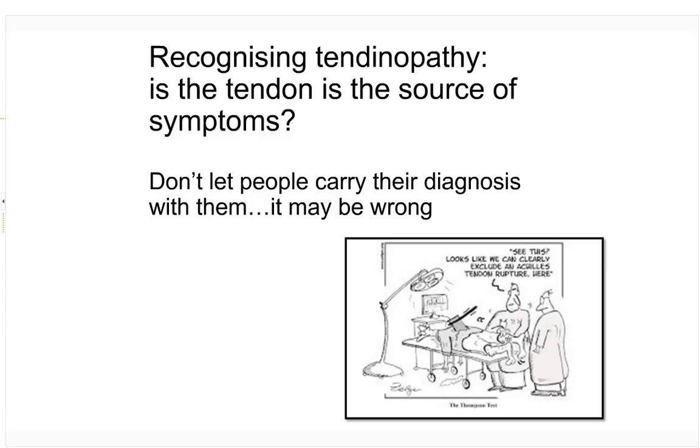It's incredibly important for us to recognise whether or not the tendon is the source of symptoms — differential diagnosis. That's a huge challenge because we don't have a gold standard. People can have pathology and be completely asymptomatic. So I'm going to go through what we use clinically and what's most supported in research.